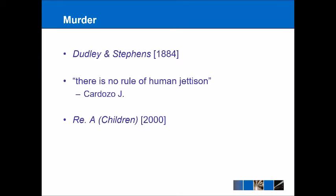Nevertheless, the courts have perhaps moved away from the idea that murder can never have a defense of necessity. The case of Re A (Children) 2000 involved conjoined twins, and it was necessary to perform an operation that killed one twin in order to save the other twin's life. In those circumstances, the defense of necessity was raised, and the case appears to suggest that there are some circumstances when necessity can be a defense to murder.